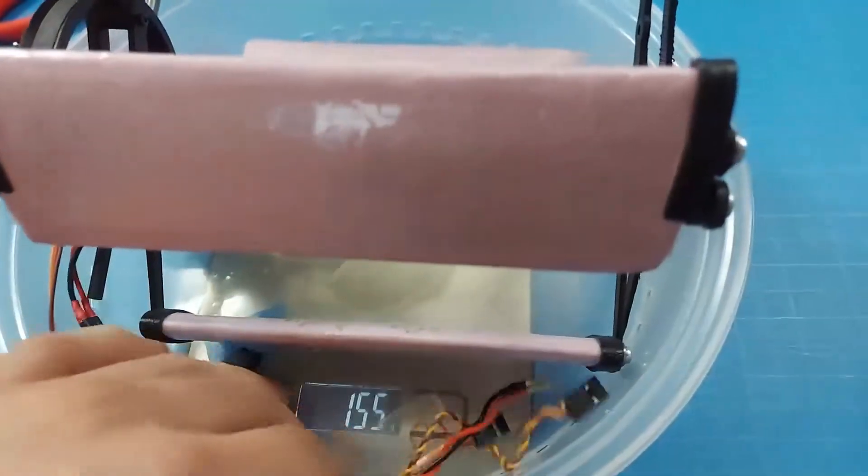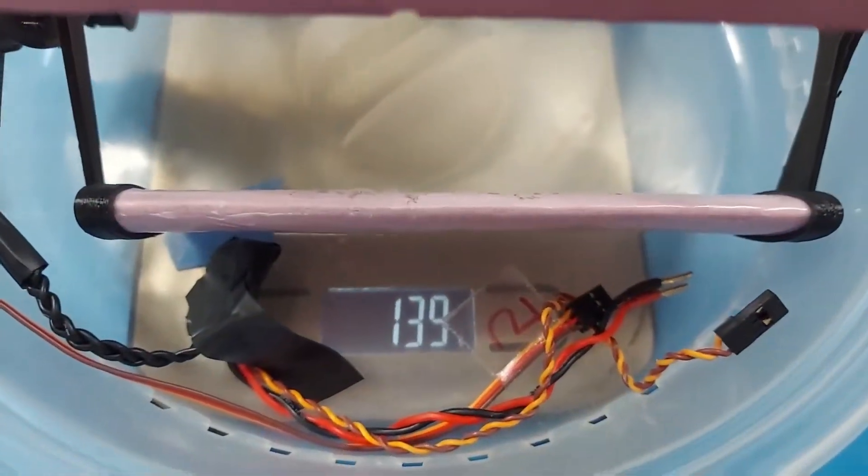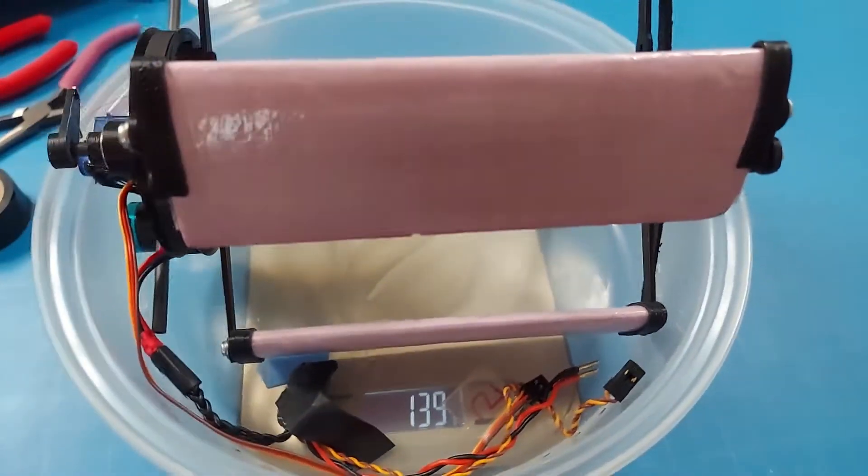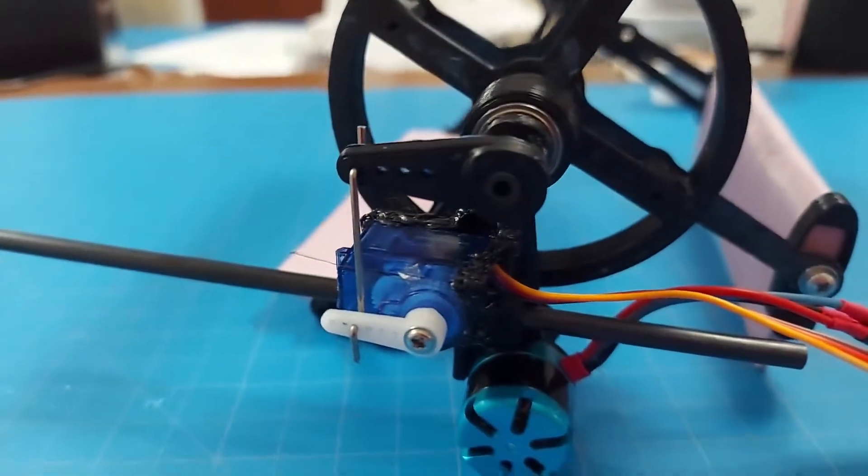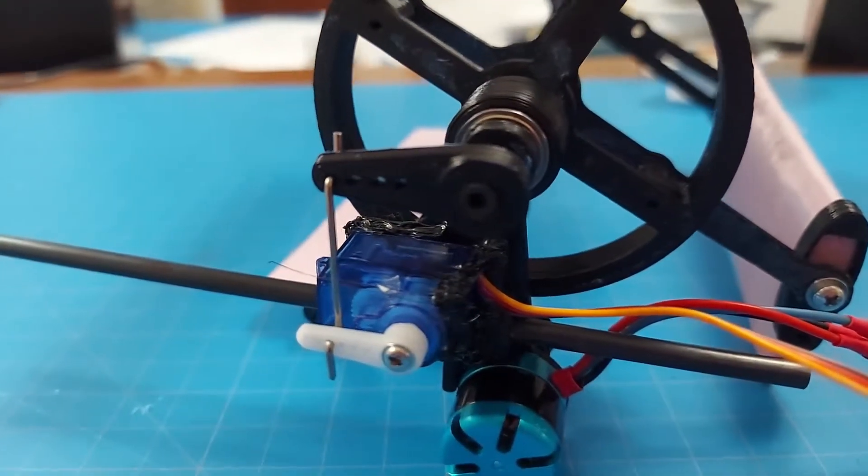It now weighs 139 grams, which is about 20 grams less than the last edition. Plus, I installed a servo which goes around 30 degrees in each direction.